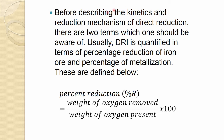Before describing the kinetics and reduction mechanism of direct reduction, there are two terms one should be familiar with. DRI is quantified in terms of percentage reduction of iron and percentage of metallization — sometimes called degree of metallization. Percent reduction is defined as the ratio of weight of oxygen removed from the ore to the weight of oxygen present in it, multiplied by 100.